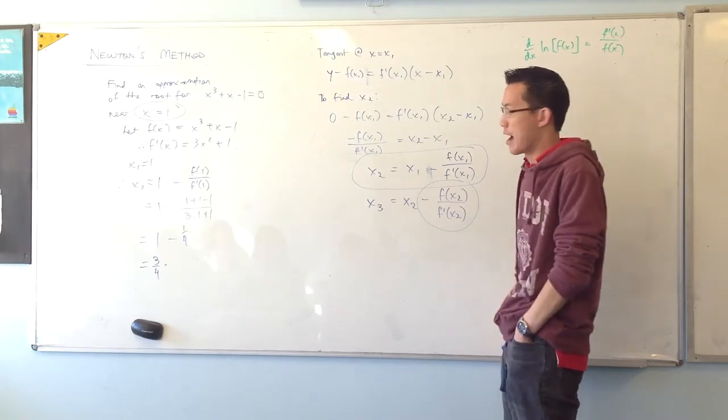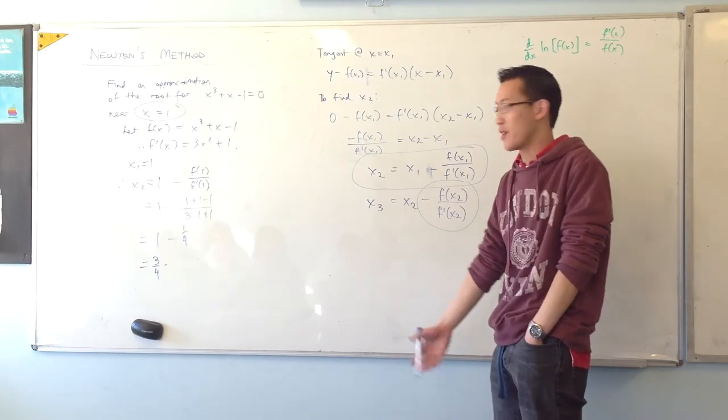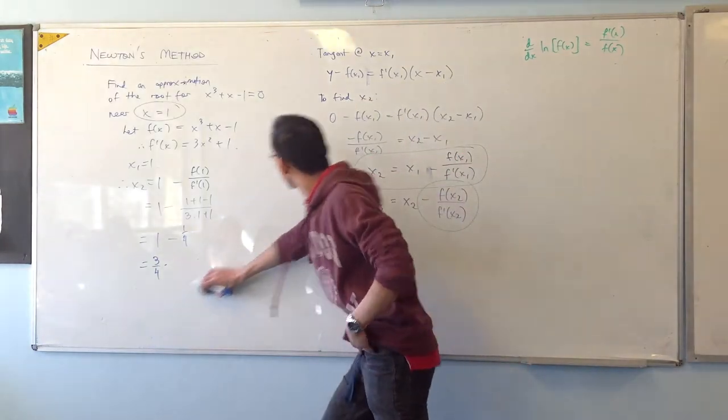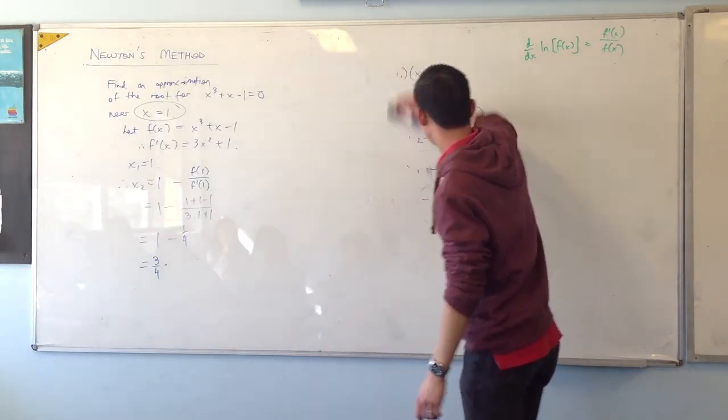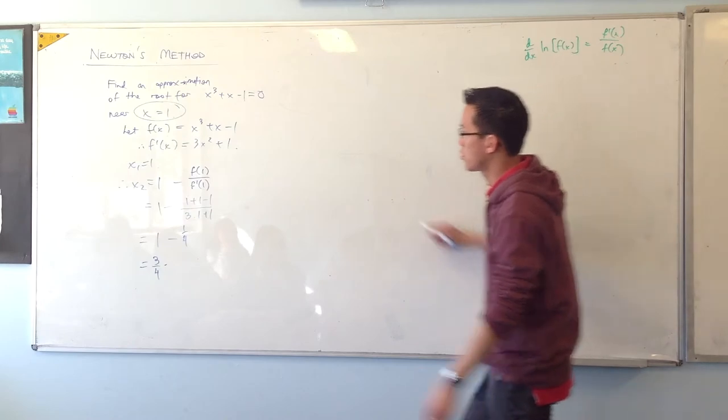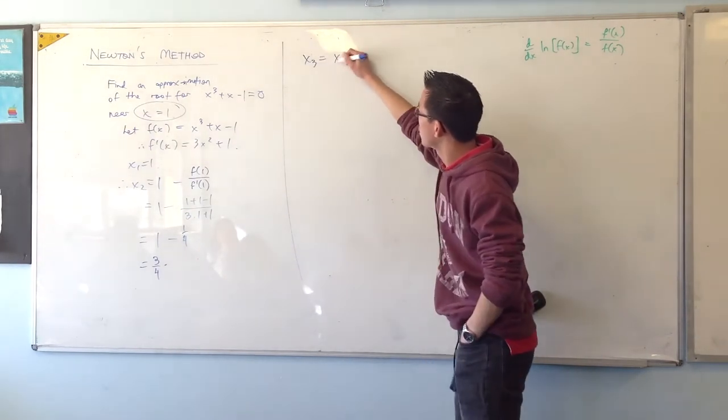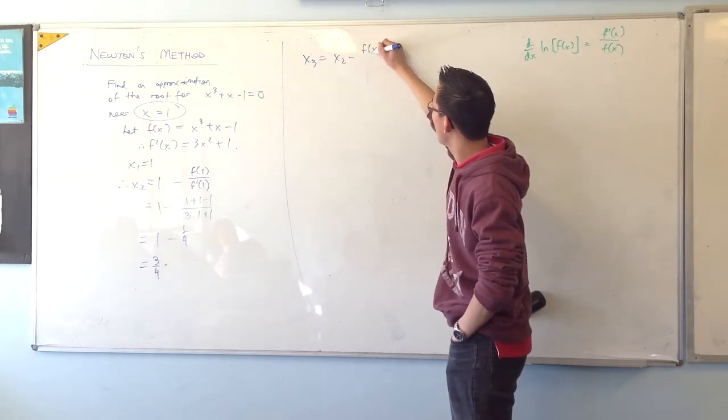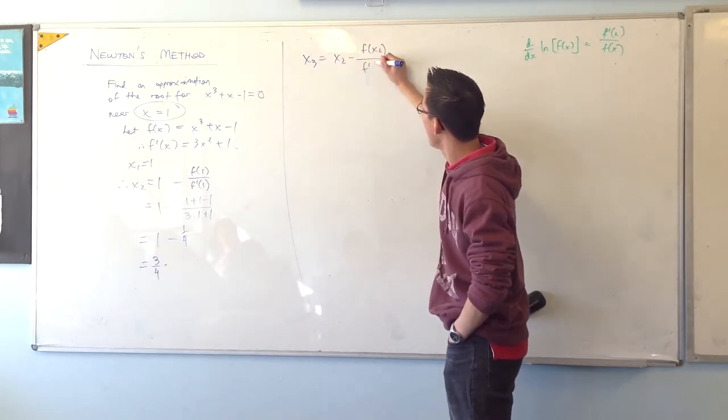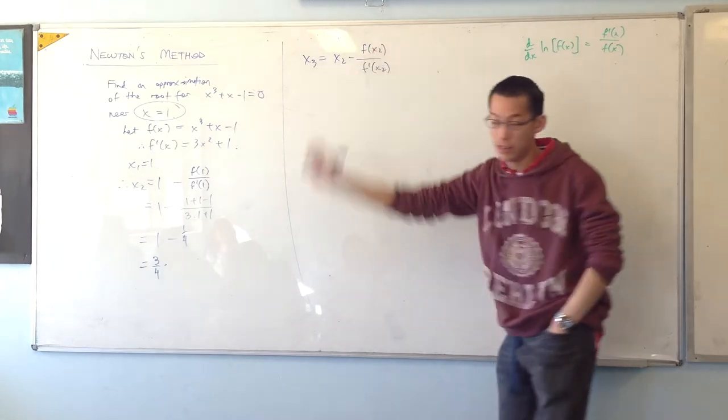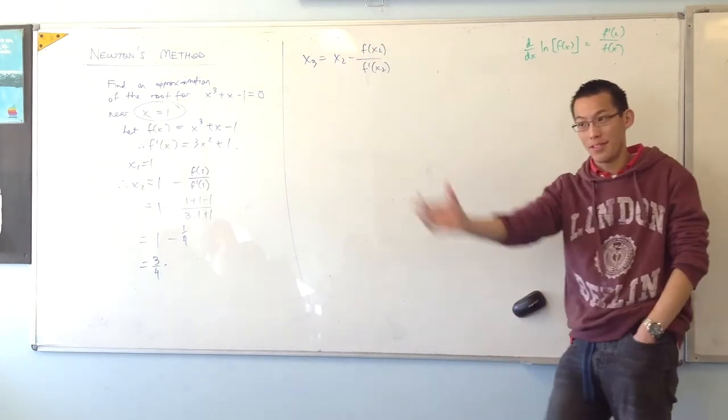Can we go further? How do we do the next one? Exactly the same way we did this one, right? So x₃, I've already got my second guess here, x₃ is x₂ minus f of x₂ on f' of x₂. So evaluate again.